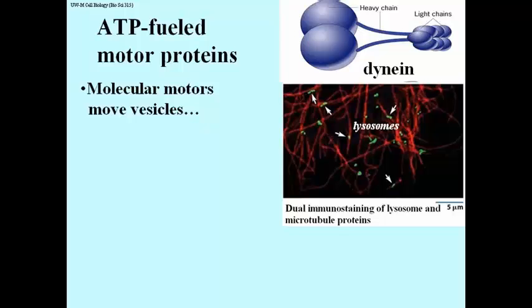As a part of the cytoskeleton, microtubules, and you'll also see this is true of actin and intermediate filaments, not only give a cell shape, but they function as a kind of scaffold on which various cellular structures and organelles are hung.